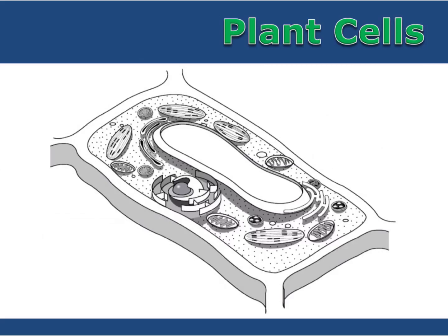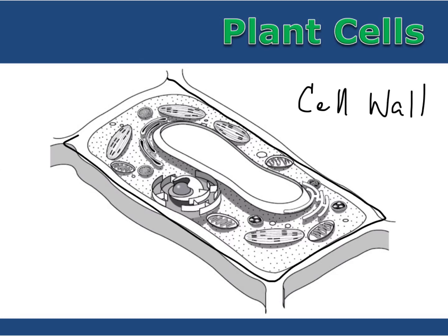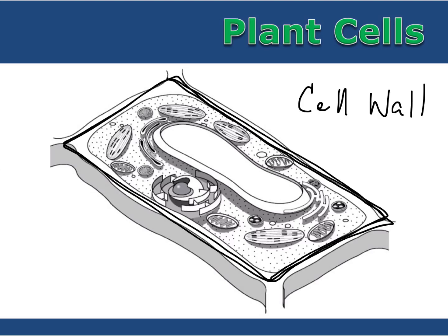Plant cells have several key features that make them easy to identify. First, they have cell walls made of cellulose, and these cell walls give plant cells a very characteristic box-like structure.